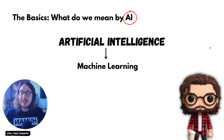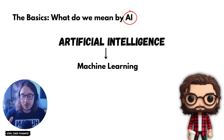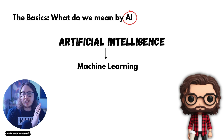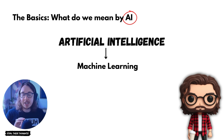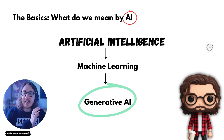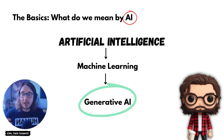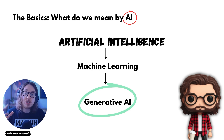A species of artificial intelligence is machine learning — machines learning. And then a species of that, or a subtopic if you will, is generative AI.